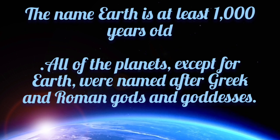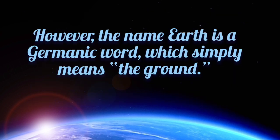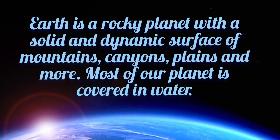The name Earth is at least a thousand years old. All of the planets except for Earth were named after Greek and Roman gods and goddesses. However, the name Earth is a Germanic word which simply means the ground.